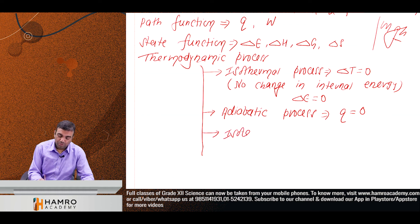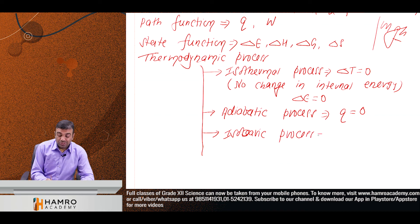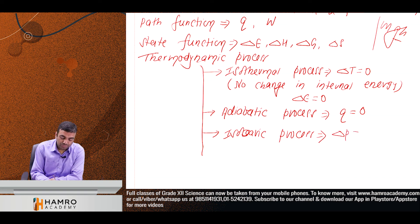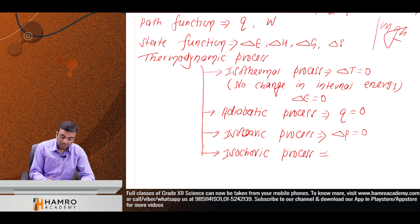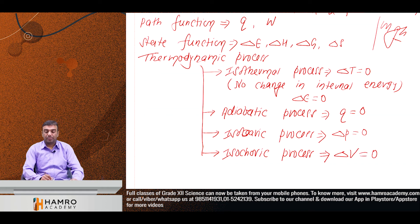Isobaric process: process at constant pressure, so ΔP = 0. Isochoric process: process at constant volume, so ΔV = 0.